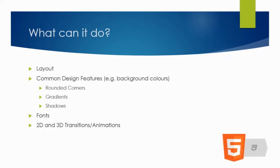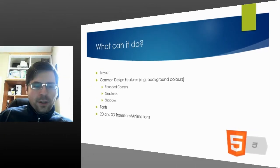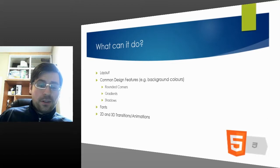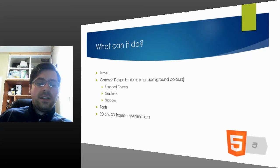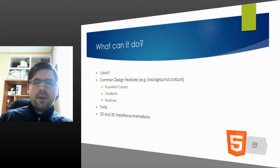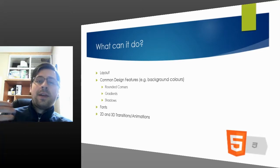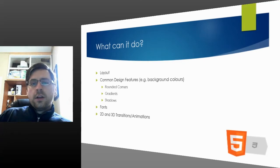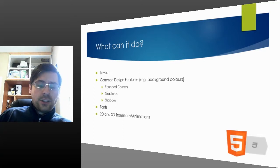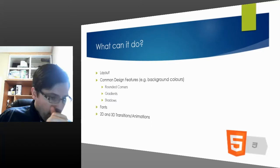What can CSS do? One of the big ones is layout — CSS frameworks give us the ability to lay things out on screens. There are also common design features like rounded corners on containers and buttons, gradients, shadows, and box shadows beneath containers. Custom fonts are another very common feature, much more highly used now in the world of CSS3. And you can do fancier things like 2D and 3D transitions and animations.